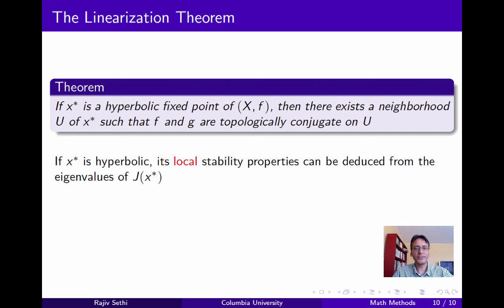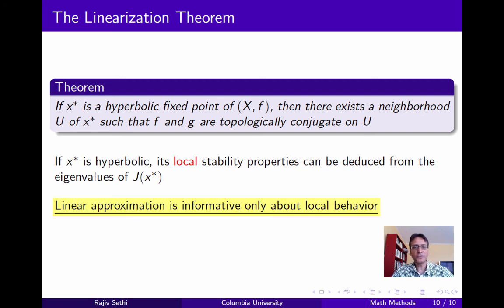So the local stability properties of the fixed point in the nonlinear system can be deduced from the stability properties of the linear approximation. This is an extremely useful result. But it's important to emphasize that the linear approximation is informative about the stability of a fixed point only locally — it tells us nothing about global behavior.